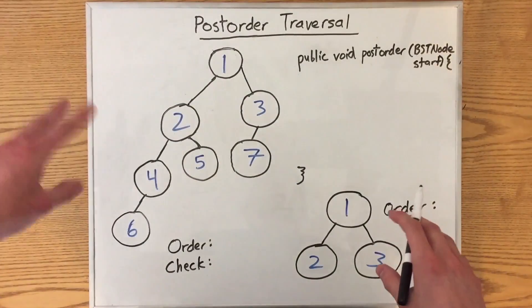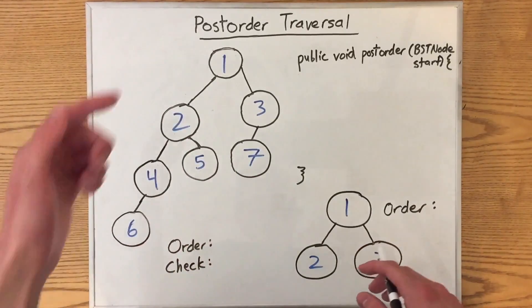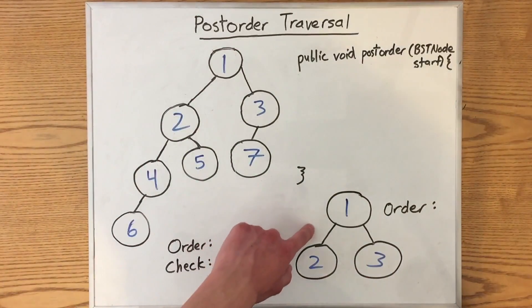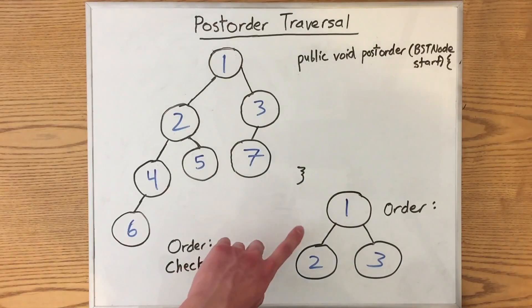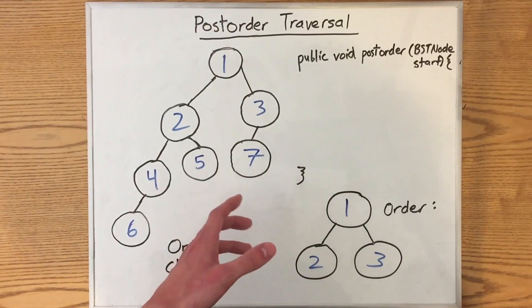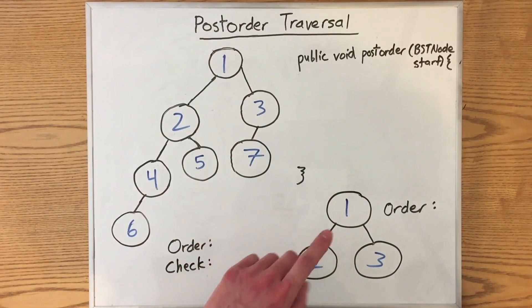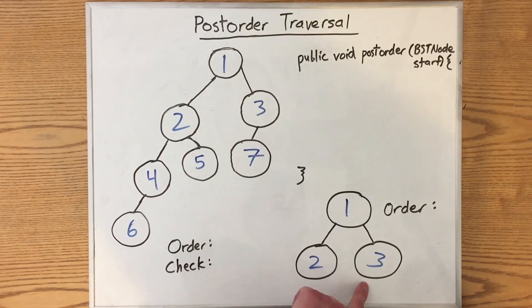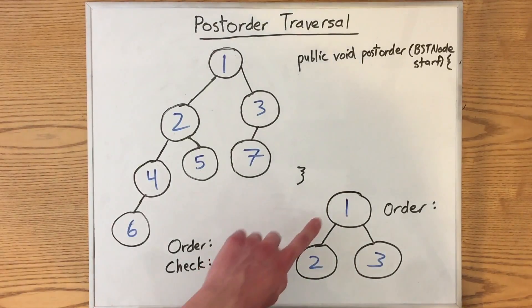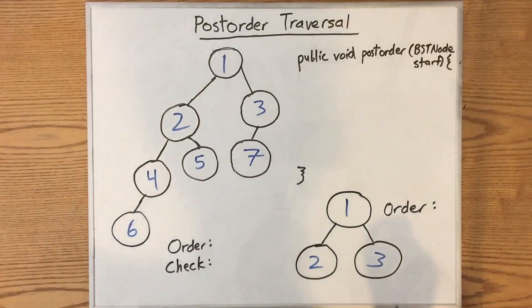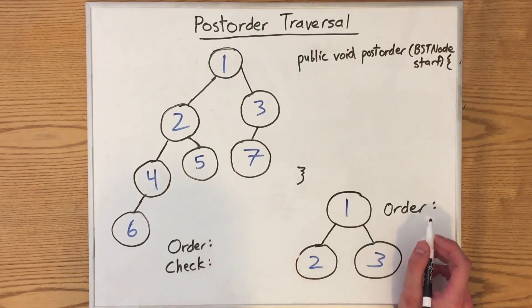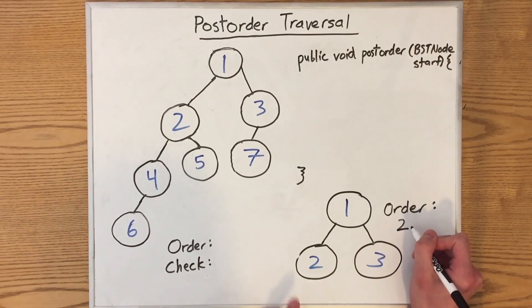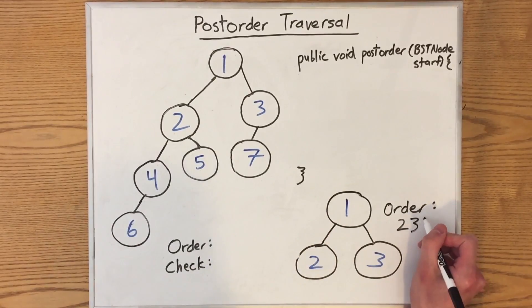Alright folks, third and final traversal of the day. We've got post-order traversal. Let's start again with that mini example. Post-order traversal works very similarly to the two traversals from before. The only difference: this time we recursively explore the left subtree, then we recursively explore the right subtree, and then we print out the value of the root. For this simple tree, since the left is a single node, we just print out its value. Then we go into the right subtree, print out its value. Then we go up into our root and print out its value.